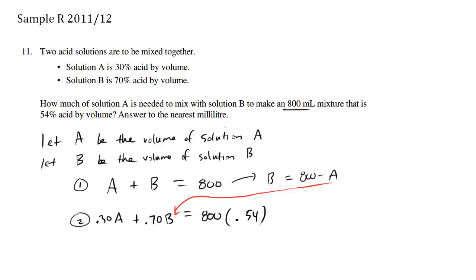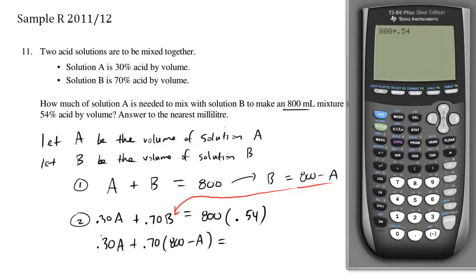We have 0.30A plus 0.70 times (800 minus A) equals this number multiplied. 800 times 0.54 equals 432. So this becomes 432, and we're going to just continue simplifying this all for A.